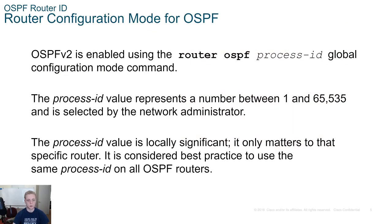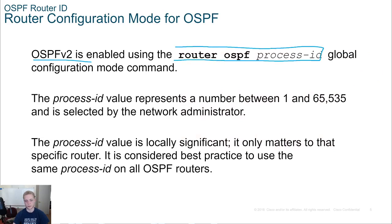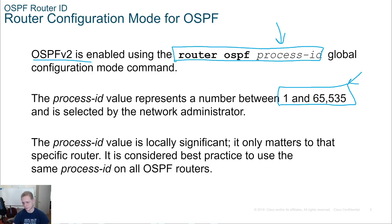We're going to enable OSPF v2 with this command. We're allowed to have a process ID between 1 and 65,535. That's a really big number - it's essentially a large bit value.